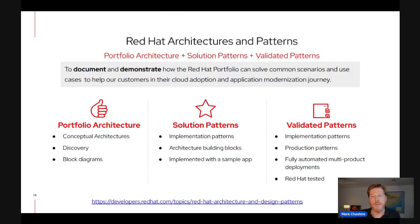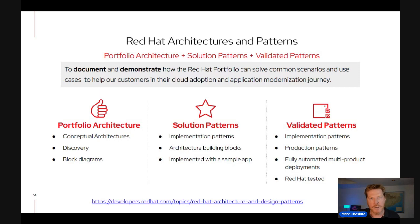The two pattern types on the right are implementation patterns. For the richer set, go with a validated pattern — these are ready for production deployment with fully automated deployment, an SLA from Red Hat, and ongoing testing as underlying components go through version changes. The middle one, solution patterns, is a compromise: real code to help with implementing the pattern and a sample app showing exactly how the architecture is solved, though you'd take it as a building block and combine it with others for your specific environment.